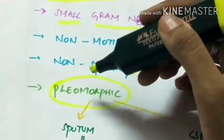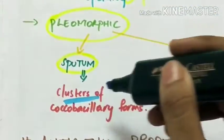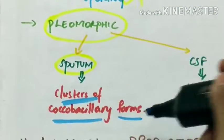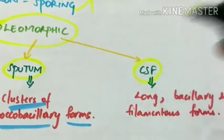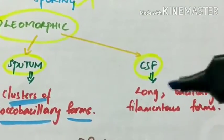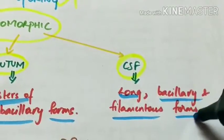That is they occur in different shapes. In sputum they are seen as clusters of coco bacillary forms and in samples of cerebrospinal fluid they are seen as long bacillary and filamentous forms.